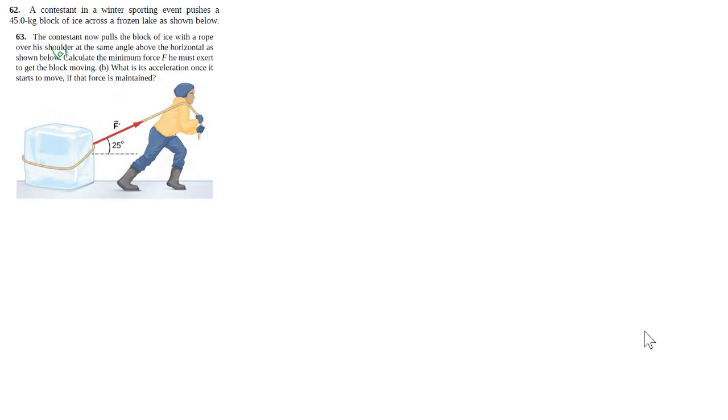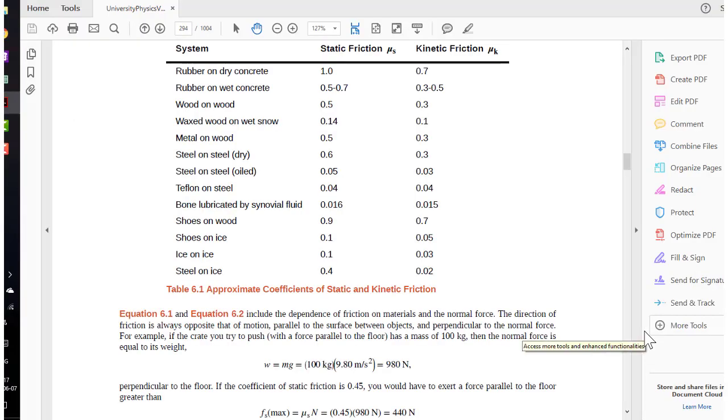Since we're dealing with friction, go look up these coefficient of friction in table 6.1 in your textbook. This is ice on ice because it's an ice block on a frozen lake. Looking at the list here, ice on ice, we've got 0.1 and 0.03.